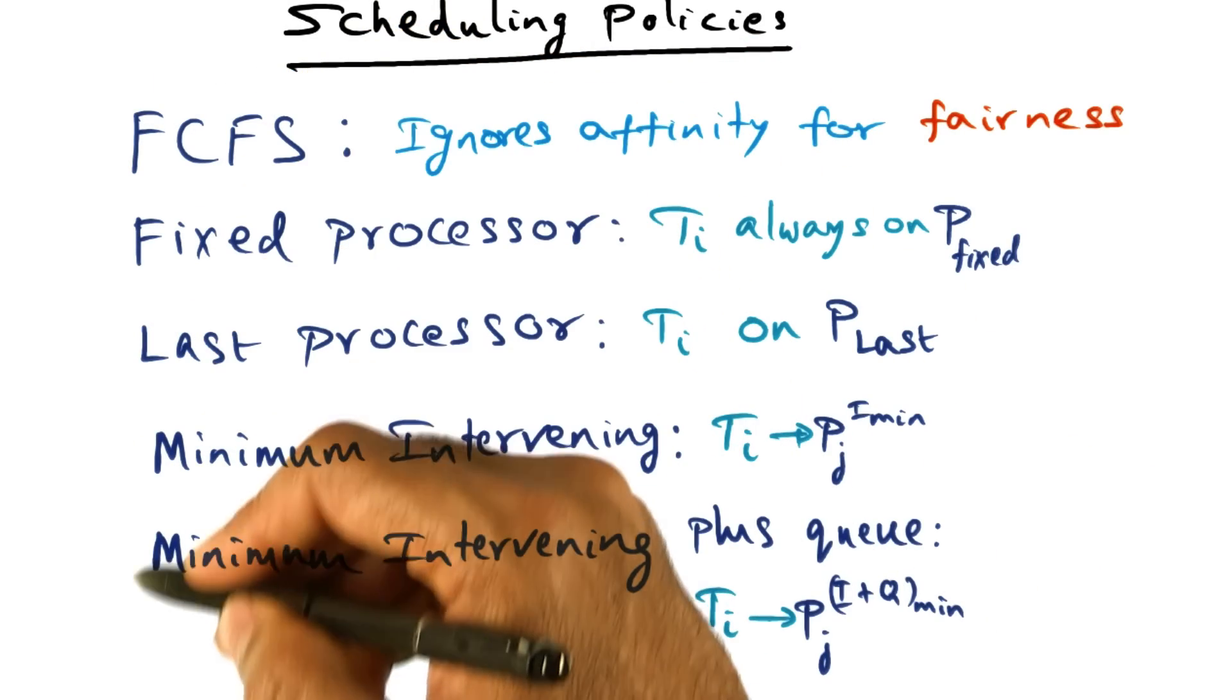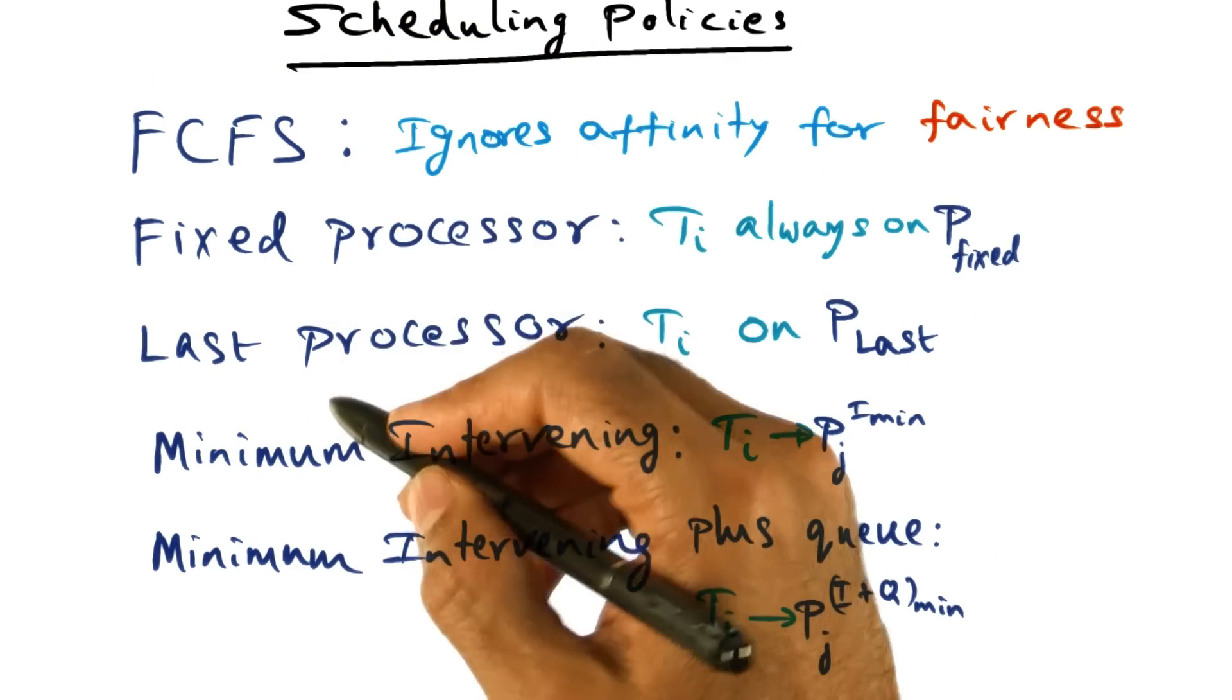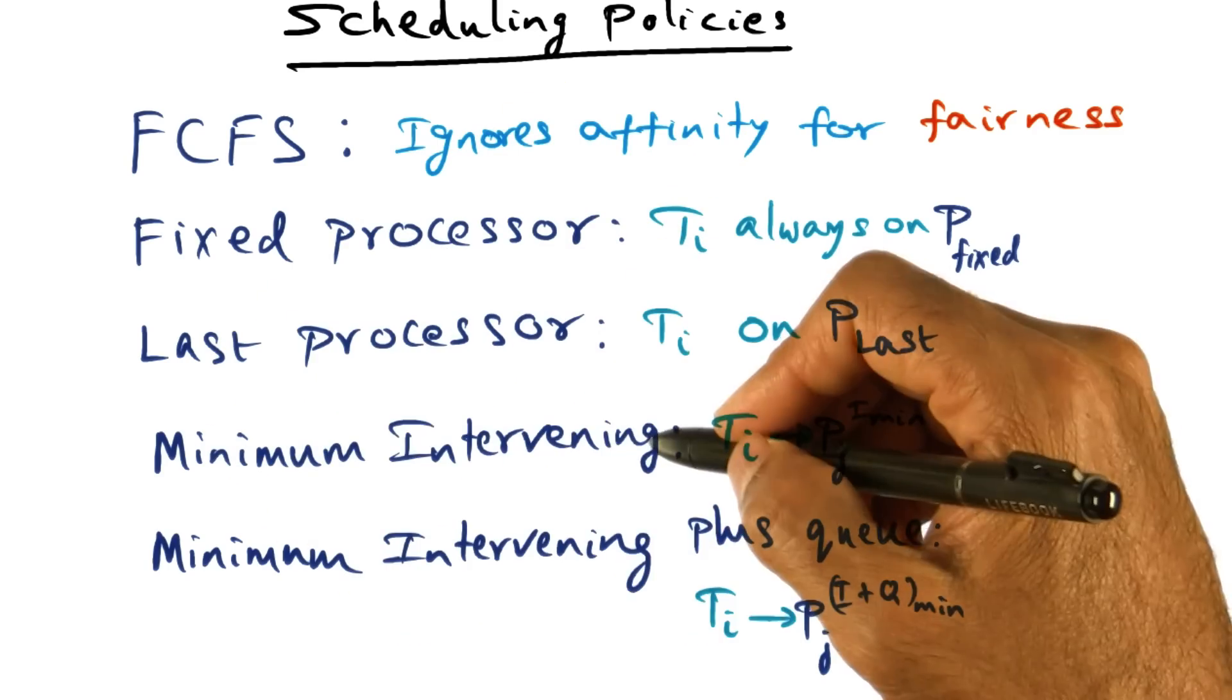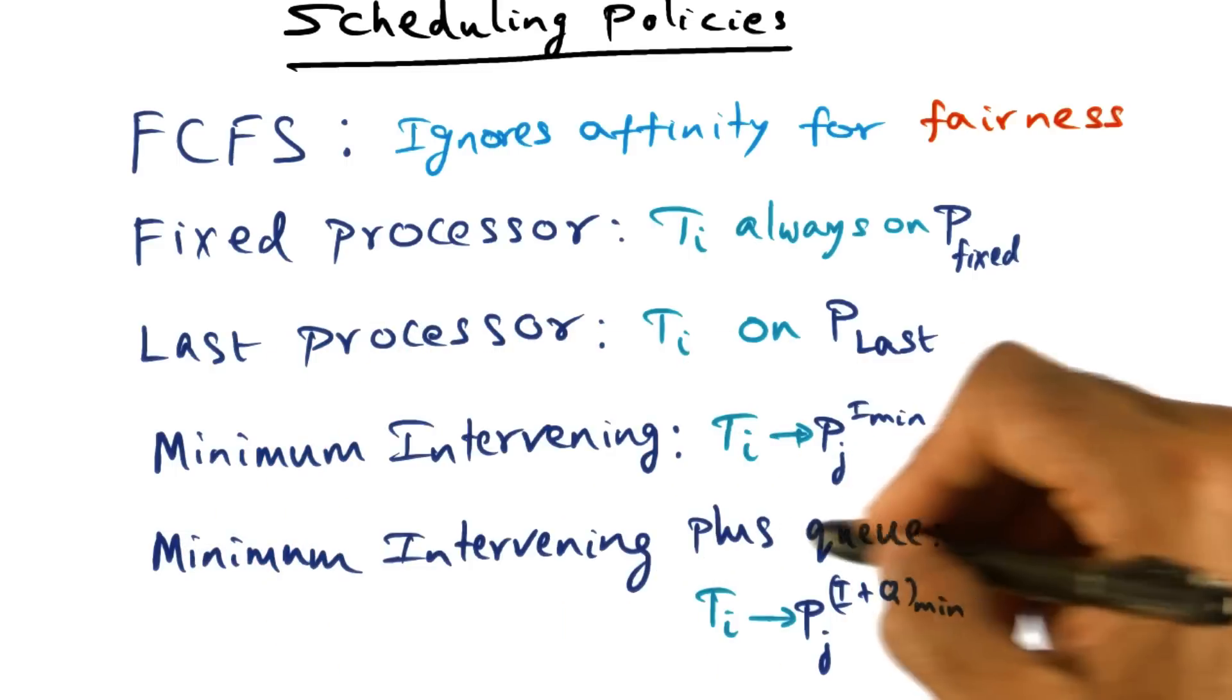So we basically have introduced five different scheduling policies: first come first serve, fixed processor, last processor, minimum intervening, minimum intervening plus queuing.